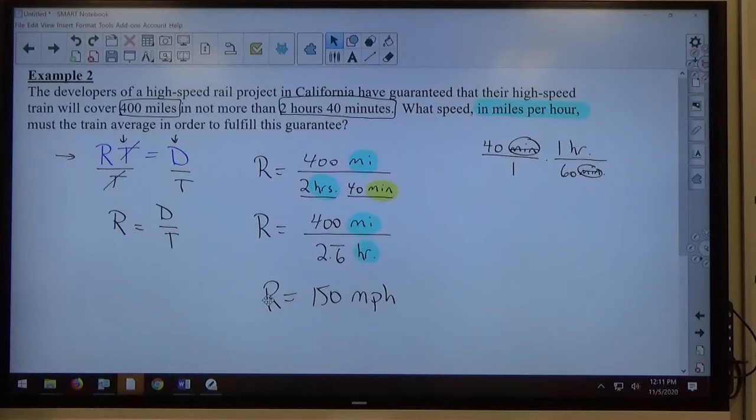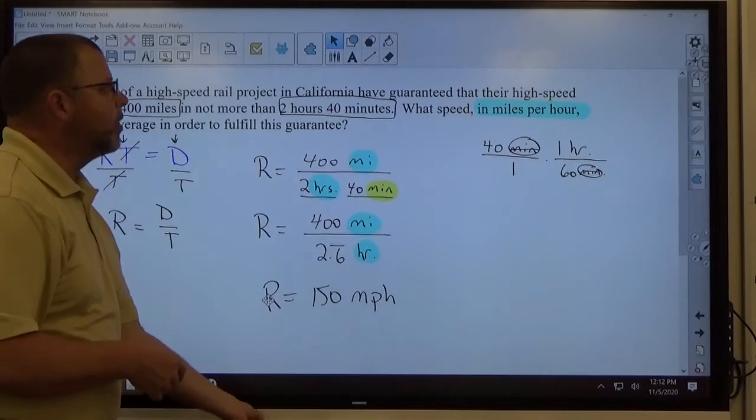So, what would happen to the speed here? Would it get bigger or smaller to get less than 2 hours and 40 minutes? Everybody agree? A faster speed gets you there faster, right?